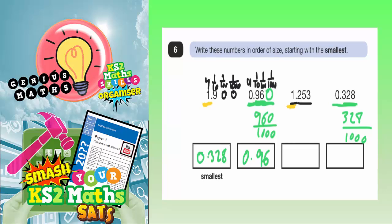So 1.253 is going to be the next one. You shouldn't really say 253. But if it helps you to think of it like that, it might help you.